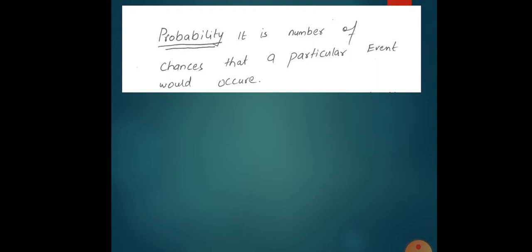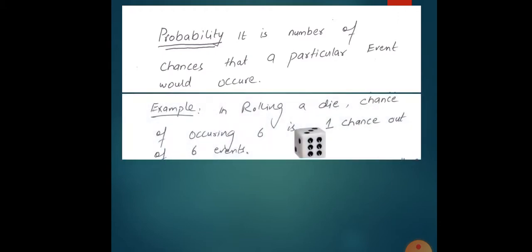An event is something like rain happening. Probability is the chances an event would occur. For example, if we roll a die and we want to check the number of chances of getting six, the number of chances will be one out of six. Six events can occur, but the number of chances for the six dots is only one out of six.